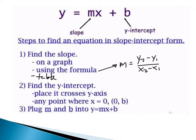The next step, once you find the slope, is to find the y-intercept. Graphically, that's the place where it crosses the y-axis. Otherwise, you're going to look for any point where x is equal to 0 — for example, like the point (0, 2). If I see that value, I know that 2 is my y-intercept because the y-intercept is where x equals 0. Then all I'm going to do is take my slope and my y-intercept — these are like my two ingredients — and plug them into my equation.